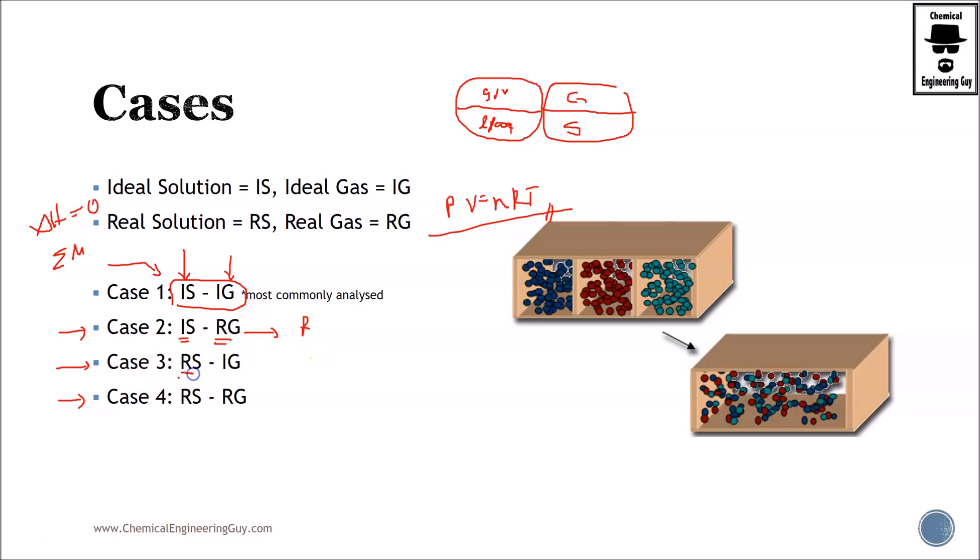We can also have real solution with ideal gas. So let's say that the ideal gas is at low pressures, so you can use the ideal gas model, which is this one right here. But the real solution will be—well, the enthalpy of mixture is not zero. They will be forming activity coefficients, and there will be very interesting cases in solution.